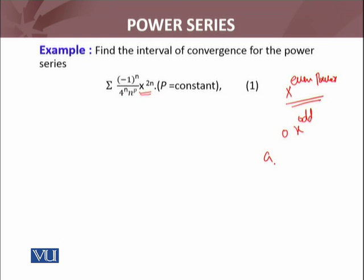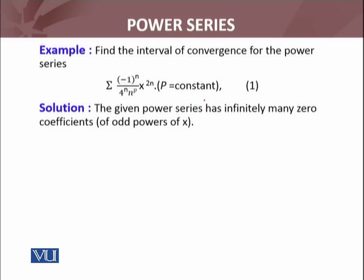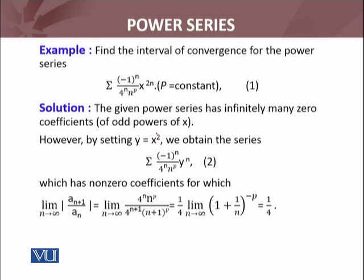This means the coefficients of odd powers of x are 0. So the first observation is that for this power series, for which a_n is (-1)^n over 4^n n^p where p is a constant, there are infinitely many zero coefficients of odd powers of x. So we have to make a trick. What is that trick?